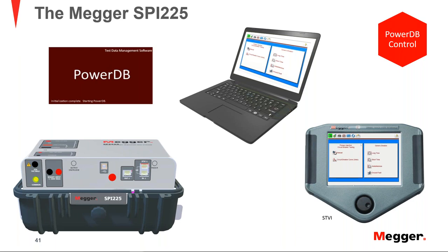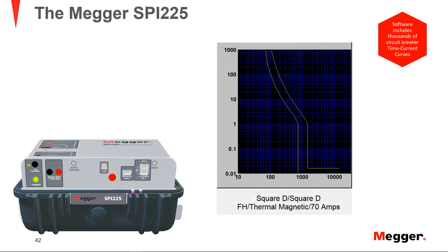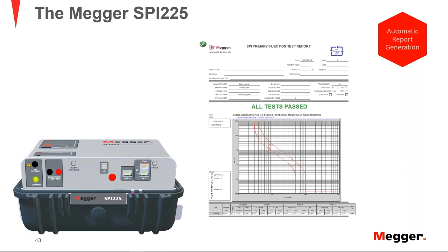The SPI is controlled using PowerDB software, either with a computer or a dedicated touch view interface — the software looks and behaves the same on both. The dedicated virtual form for the SPI includes thousands of time current curves for circuit breakers, so the software automatically plots your result against the curve and tells you if it's a pass or fail. If the circuit breaker isn't in the library, you can send a PDF and Megger will digitize it. Reports are automatically generated and ready to save as PDF or print in just a couple of clicks.